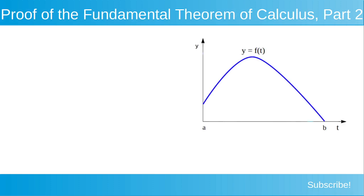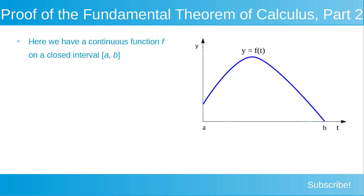We start with this plot on the right-hand side of the screen. Here we have a continuous function f on a closed interval from a to b. Our function f is plotted and highlighted in blue. We can refer to that function as f or as f(t). On our horizontal axis we have our t variable, and on our vertical axis we have our y variable.